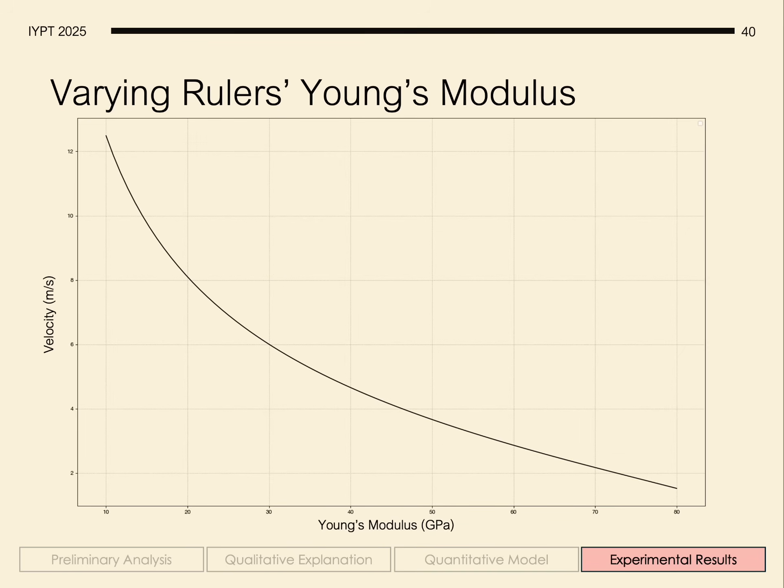Expectedly, as we increased the Young's modulus, meaning the rulers became more stiff, the velocity actually decreased.